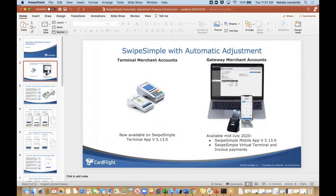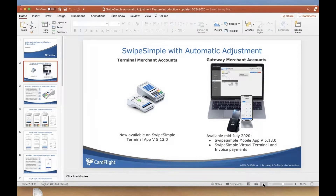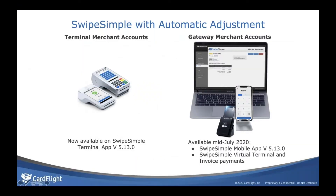Swype Simple — we're calling it automatic adjustments. What that is, is a feature that can support cash discount programs. We're not actually offering the cash discount program; we're just offering the feature that allows you to support cash discount with Swype Simple. Let's talk about what devices we support automatic adjustment on.